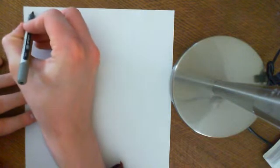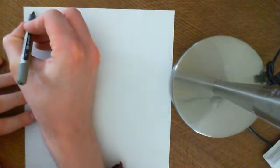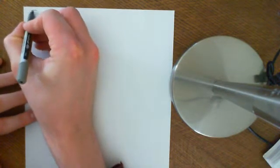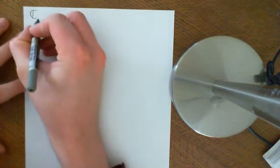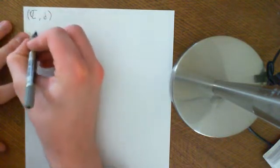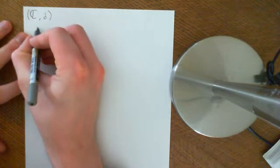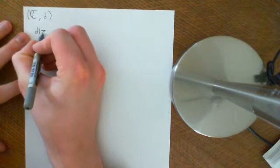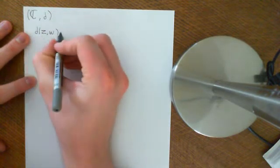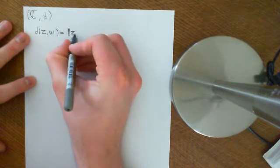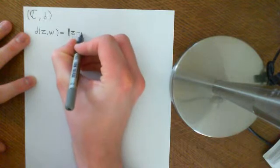Remember, the complex plane is a set — the complex numbers. We put a metric on it, and the metric that we define is the distance between two complex numbers, let's call them z and w, defined to be the complex modulus function of z minus w.